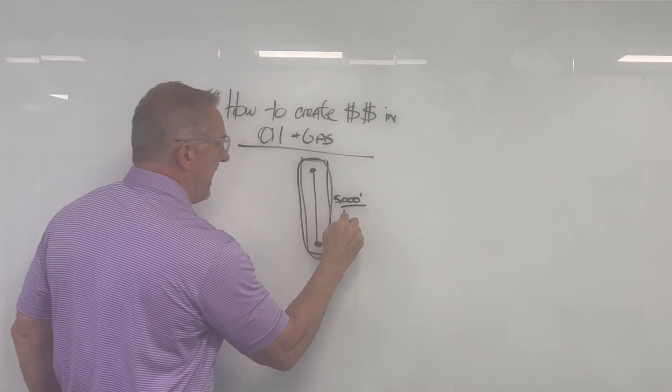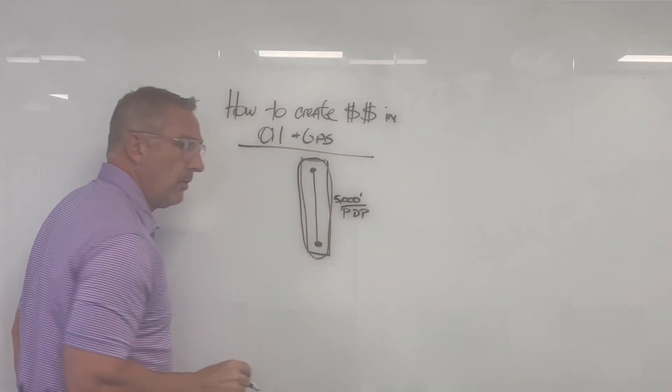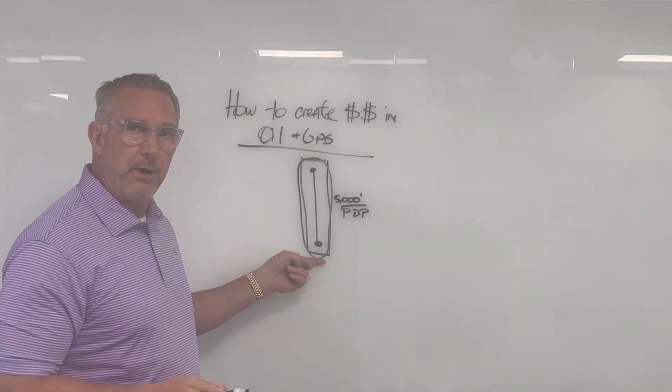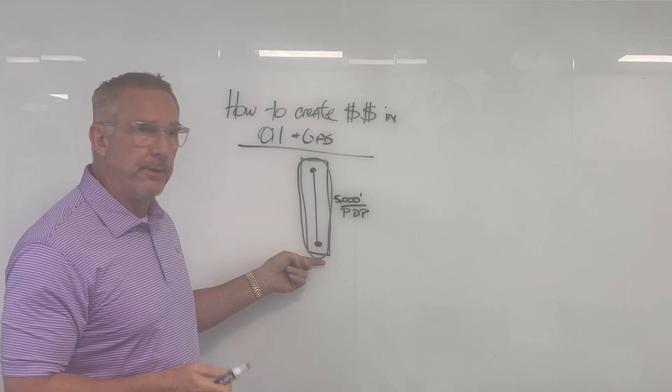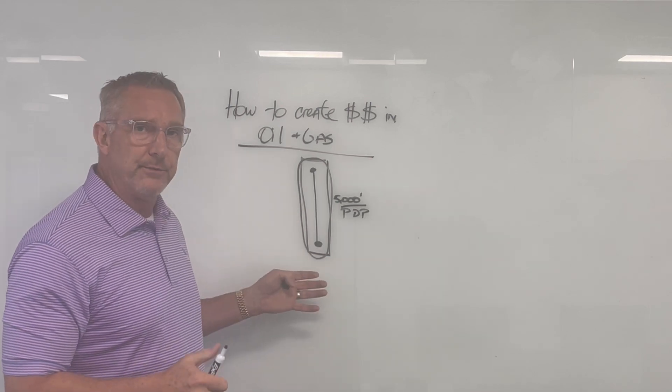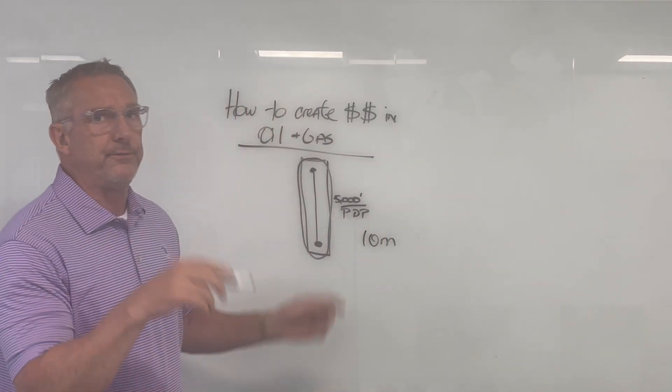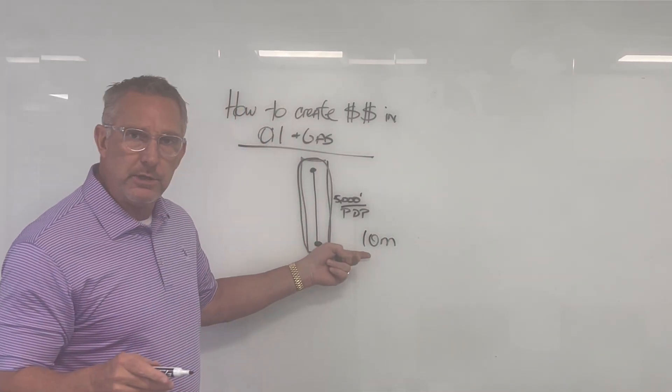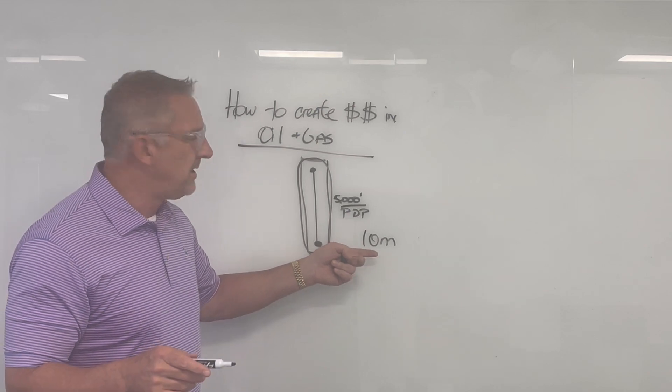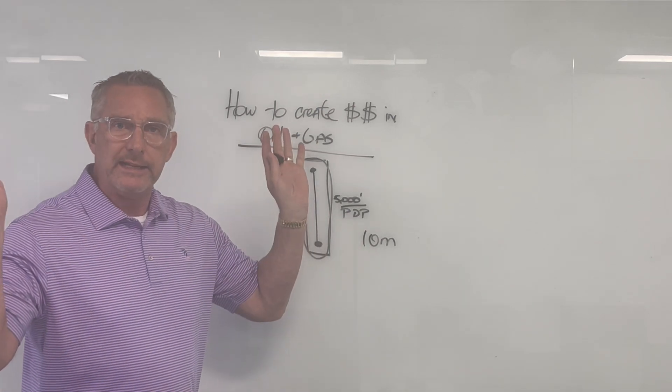...you're going to have what they call PDP, which is producing property. There's going to be value on this property right here. Let's say the value of this 5,000-foot lateral is $10 million. It costs you $5 million to drill it, the value is going to be $10 million. That's awesome.